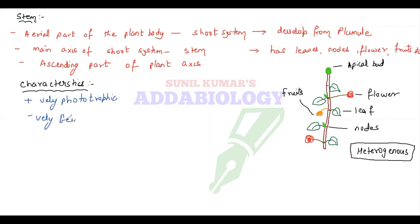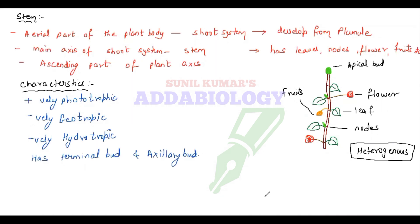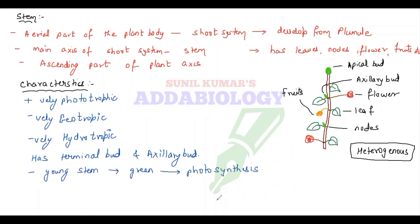Stems are positively phototropic, moving towards light; negatively geotropic, against the earth; negatively hydrotropic, against water. They have terminal bud and axillary bud. Young stems are green in color, so they also perform photosynthesis.